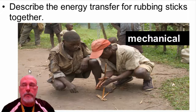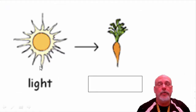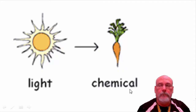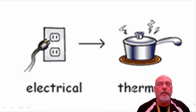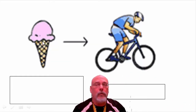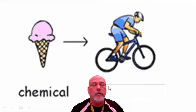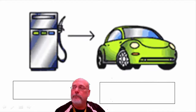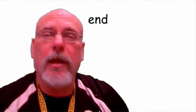Here are more energy transformation examples: light energy is converted through photosynthesis into chemical energy stored in plants. Electrical energy heats an electric stove, creating thermal energy. Food is stored chemical energy — a person eats it and uses that chemical energy to pedal a bicycle, which is mechanical energy. Gasoline is chemical energy that, when burned, causes a car to move — that's mechanical energy.